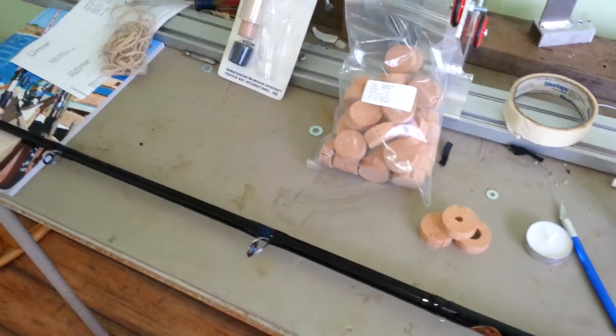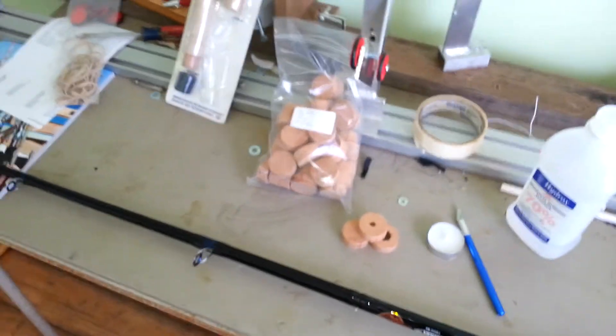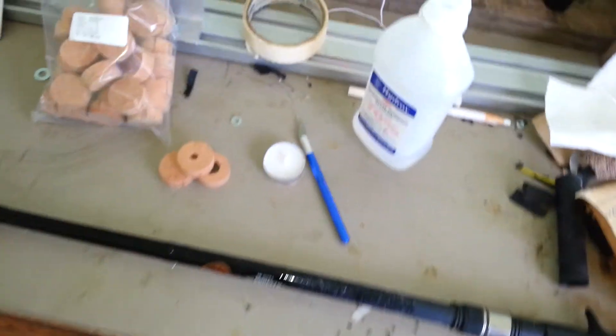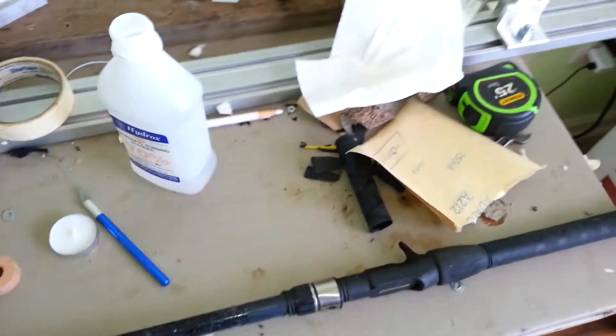You're going to want to probably in this case have to remove all the guides. There's no other way to put a new section on unless you do it another way, and I wasn't happy with the cork grip.